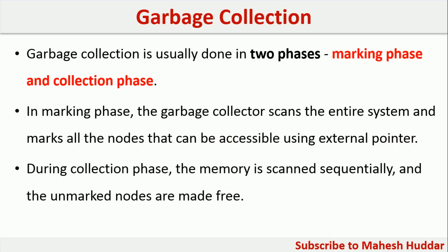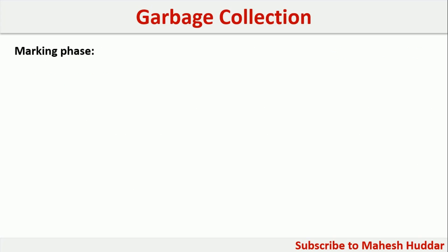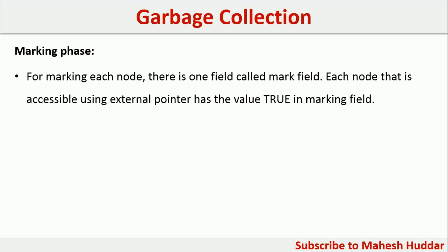In the collection phase, all nodes or objects which are not accessible will be removed from the system so that free space can be created and allocated to new objects. The marking phase has something called a mark field. When the system scans the entire memory and finds that some objects are accessible, they will be marked as true. If a particular object is not accessible, it will be marked as false.